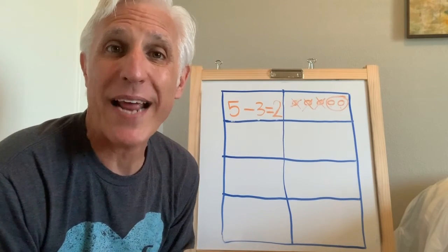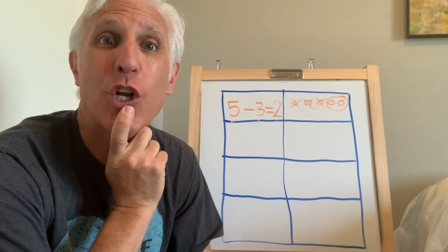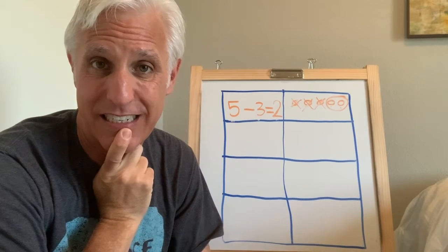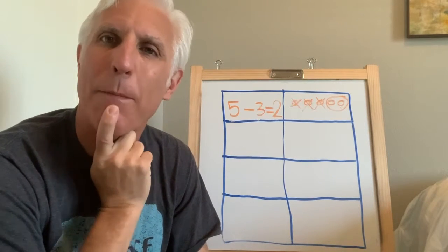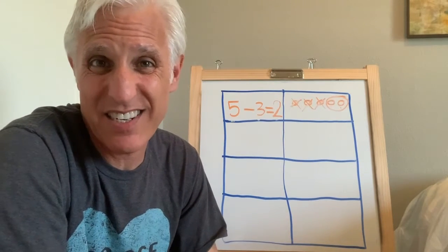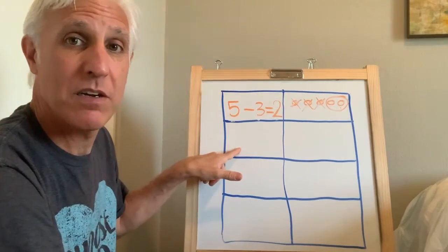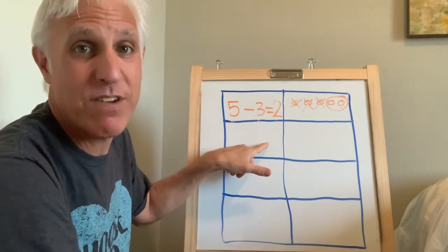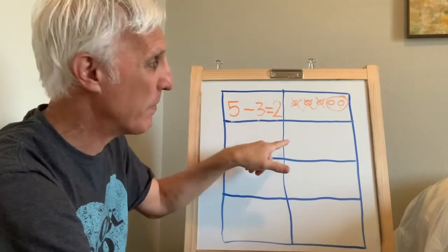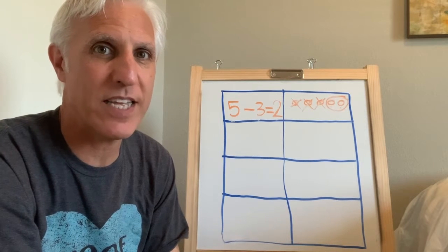All right, next story. Let's do a story about ants. Once upon a time there were nine ants looking for leaves, but then five of them went back in the hole to the nest. Nine ants and five of them went away to the hole. How many are left? Push pause and see if you can write the equation.